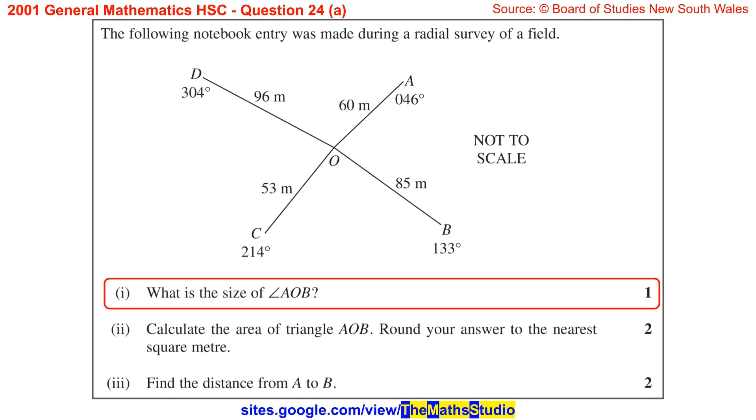Question 24, Part A. The following notebook entry was made during a radial survey of a field. Part 1: What is the size of angle AOB?